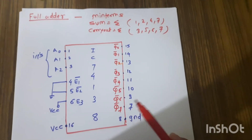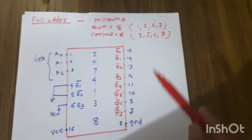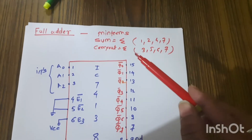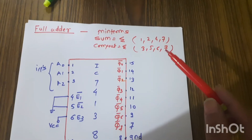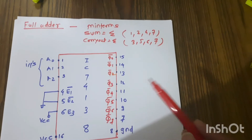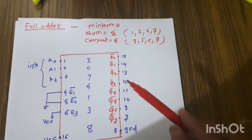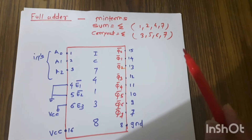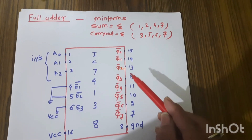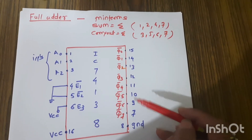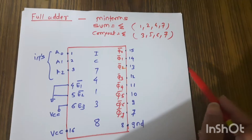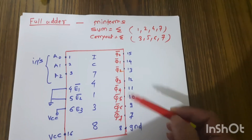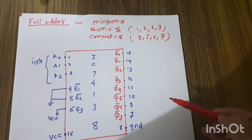To implement a full adder using IC 74138, we need to connect the min terms. For sum, the min terms are 1, 2, 4, and 7. For carry out, the min terms are 3, 5, 6, and 7. We connect these directly to an OR gate — min terms 1, 2, 4, 7 to one OR gate for sum, and 3, 5, 6, 7 to another OR gate for carry out.